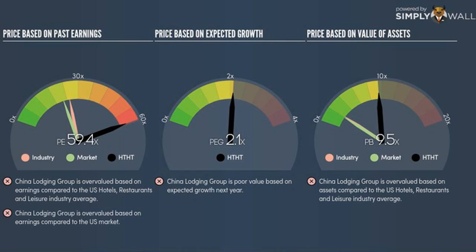At 59.4x, HTHT's PE is higher than its industry peers at 25.4x. This implies that investors are overvaluing each dollar of HTHT's earnings. As such, our analysis shows that HTHT represents an overpriced stock.